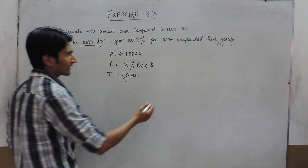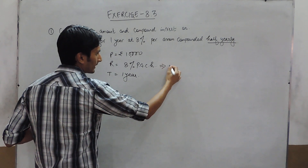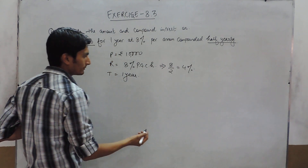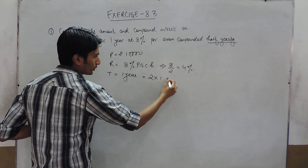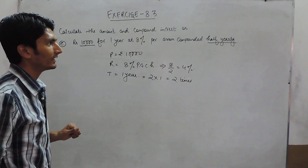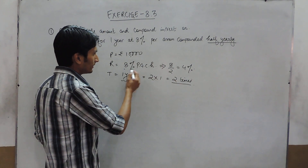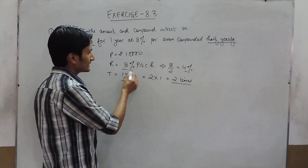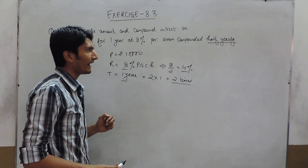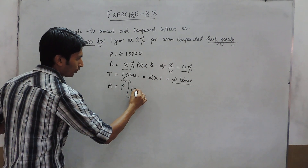We know that if the compound interest is payable half yearly, then the rate will become half and the time will become twice. This means if the interest is half yearly, in a year interest will be payable 2 times, and if the yearly rate is 8%, after 6 months the rate will be paid at 4%. You can put the values into this formula.